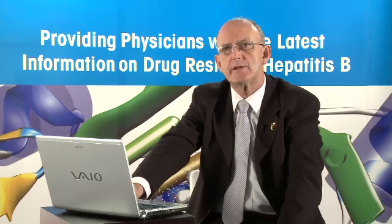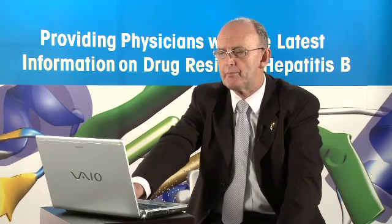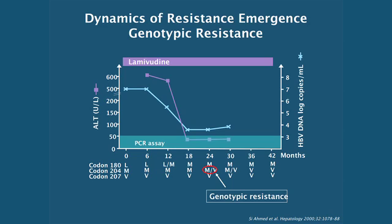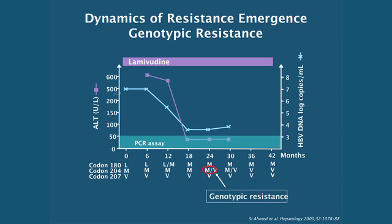The signature mutation for lamivudine resistance is at codon 180 and 204, with codon 204 being the major signature mutation — the YMDD mutation, seen in both HIV and hepatitis B — representing a methionine to either valine or isoleucine change. In the first six months of therapy, there are no polymerase changes, but after 12 months, pressure on codon 180 appears, with a 50-50 mixture of L and M. By two years, the codon 204 methionine is becoming a valine. Codon 207 serves as a reference point not associated with lamivudine failure and should not change. By year two, there is already evidence of genotypic resistance to lamivudine.